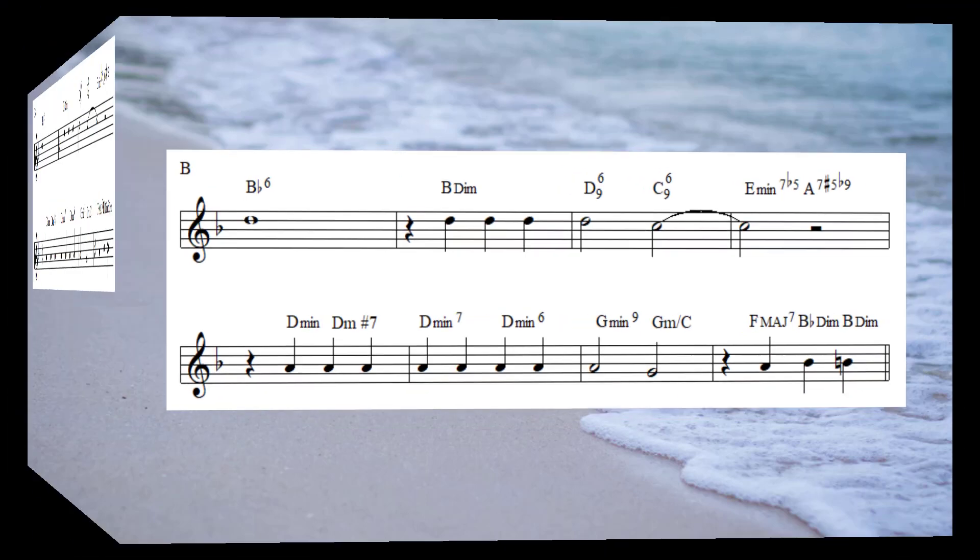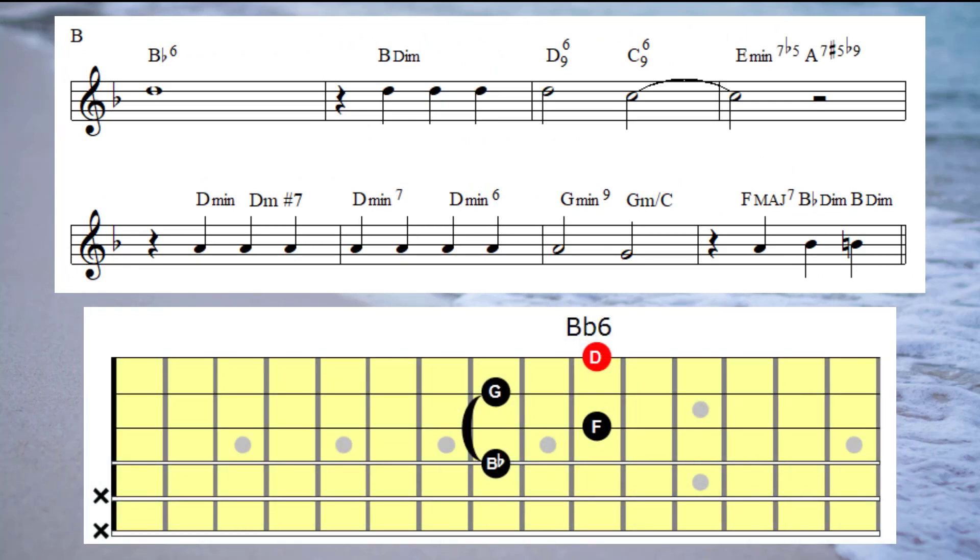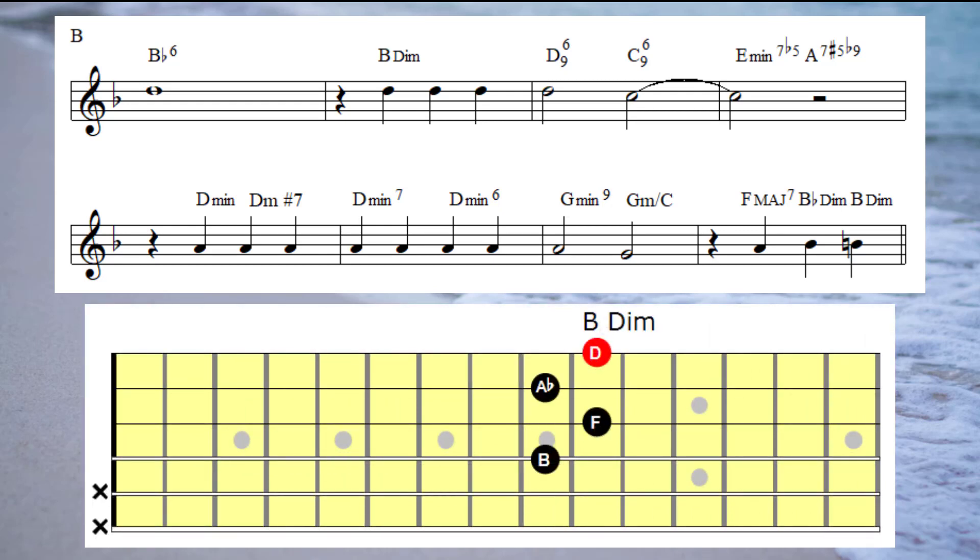So in bar one under the D note, I'm going to play a B flat six this time. On to the second bar, I'm going to play a B diminished under the D note.